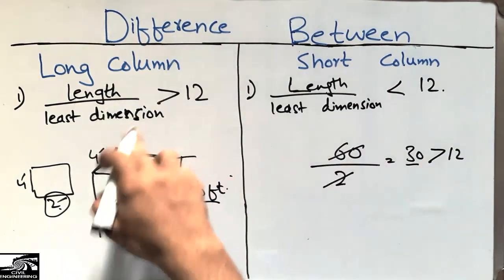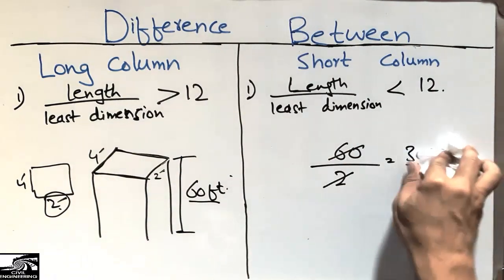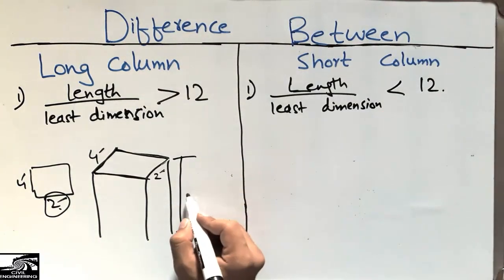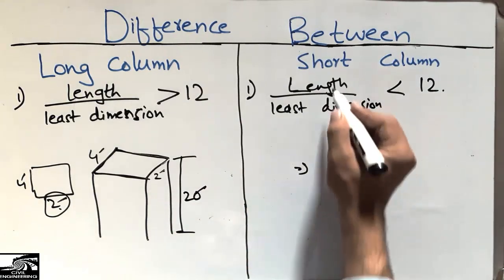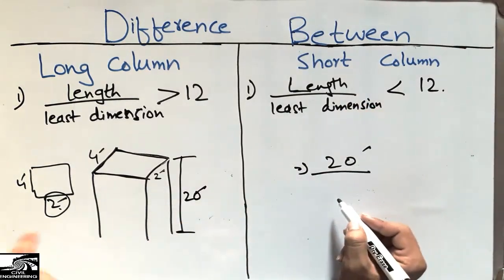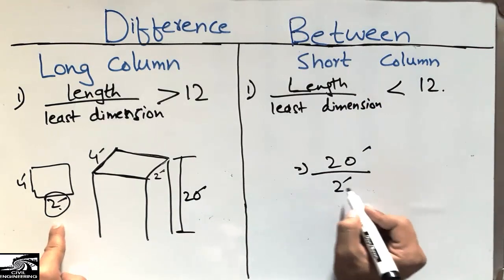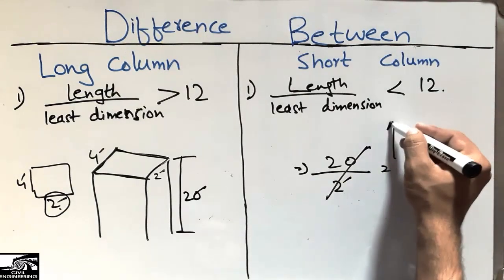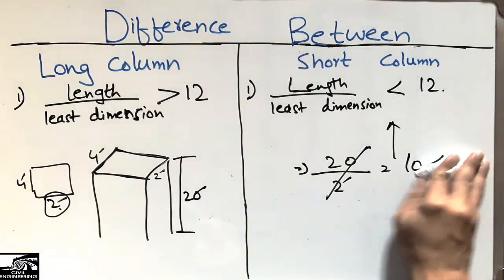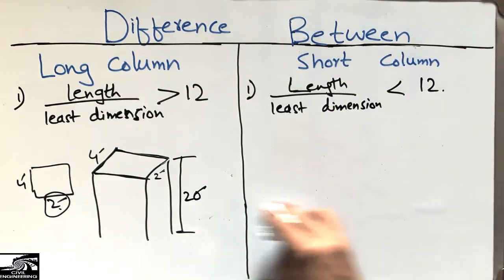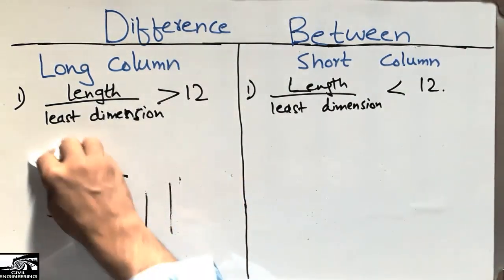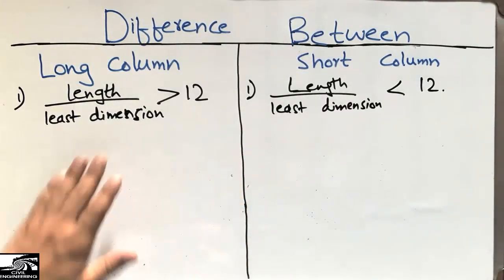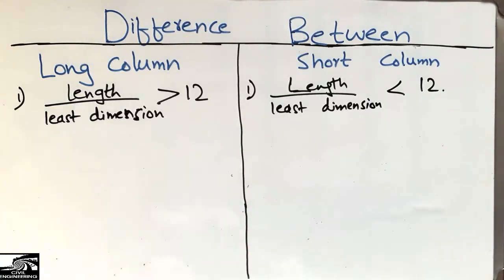In the case of the short column, taking the same cross-section but with a length of 20 feet: dividing 20 by the least dimension of 2, we get a ratio of 10, which is less than 12. So it is categorized as a short column. This is the main difference per the Indian Standard for differentiating between long and short columns.